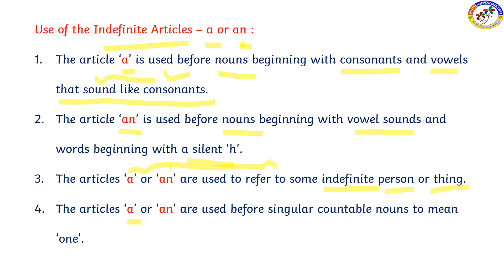A and AN are used to refer to singular countable nouns. Every article is used with a singular countable noun — only one. When you see a singular countable noun, you can use an article. This is a very primary thing you should always remember. If you use an article, the noun must be singular and countable.